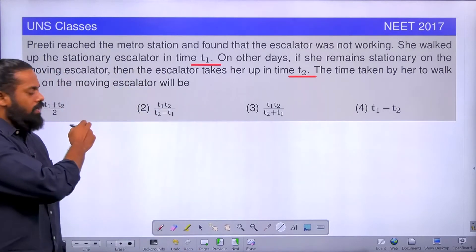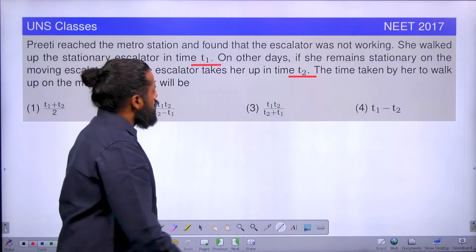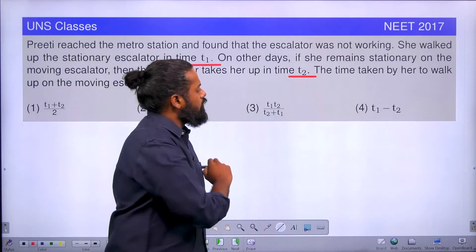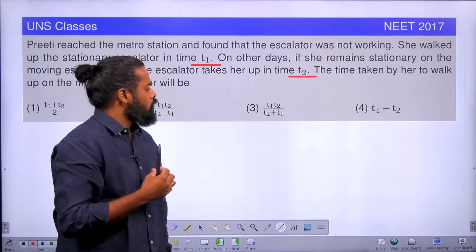See here options are given: T1 plus T2 by 2, T1 T2 by T2 minus T1, T1 T2 by T2 plus T1, T1 minus T2. This is a question from NEET 2017. How to solve this?